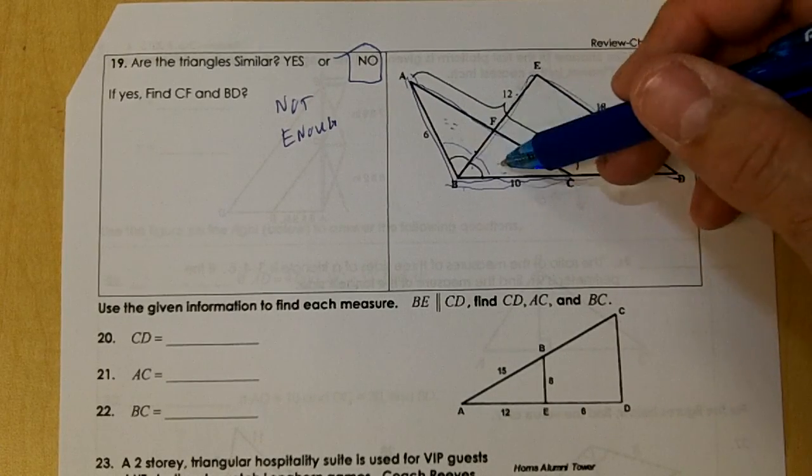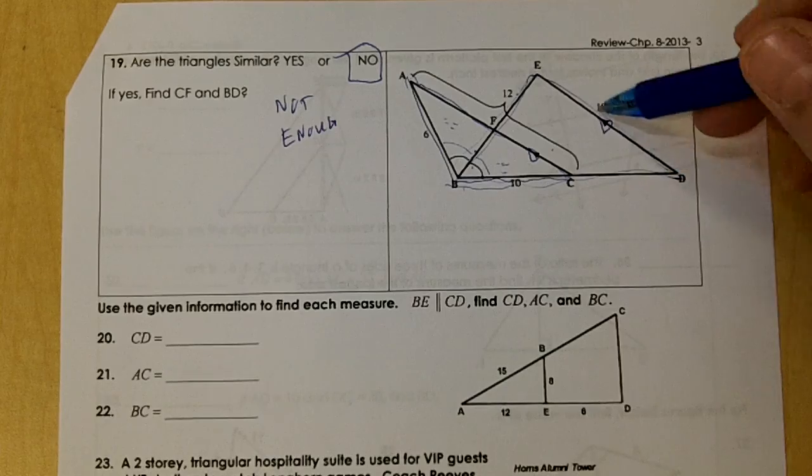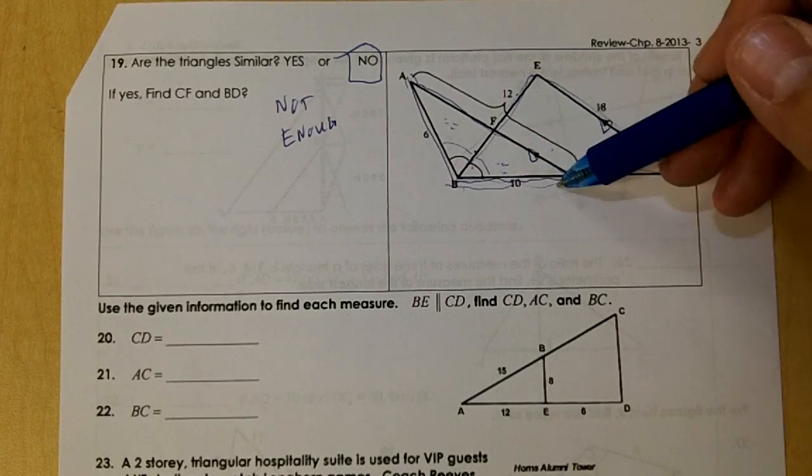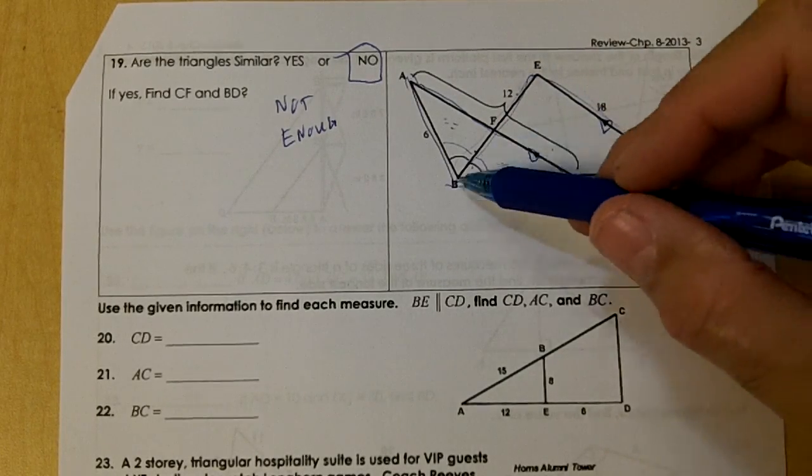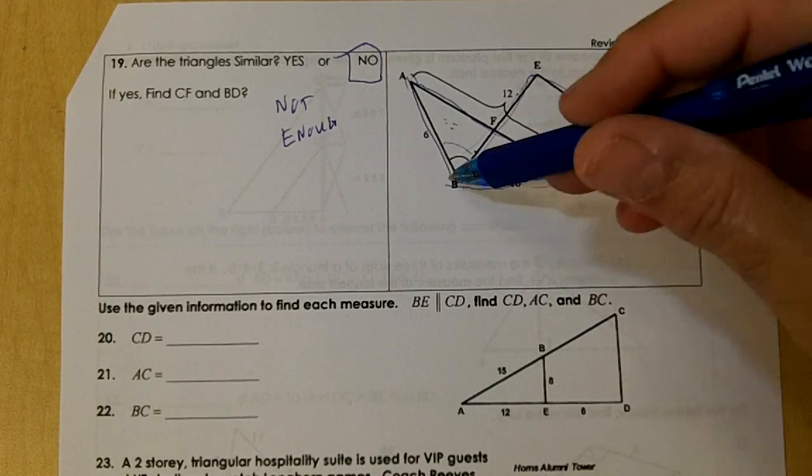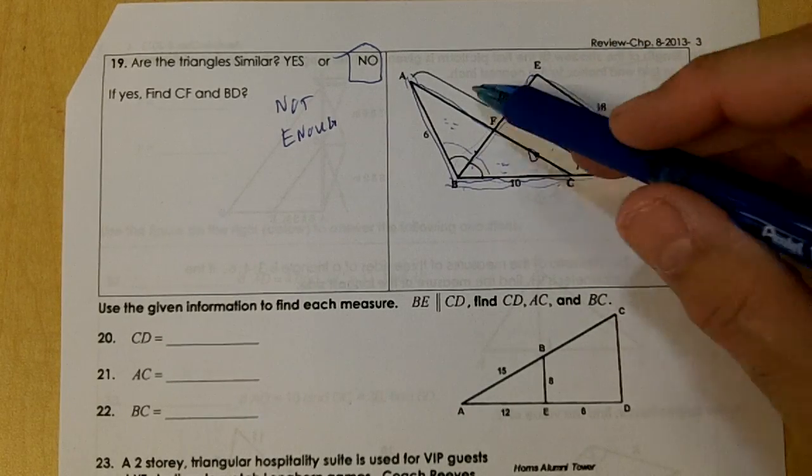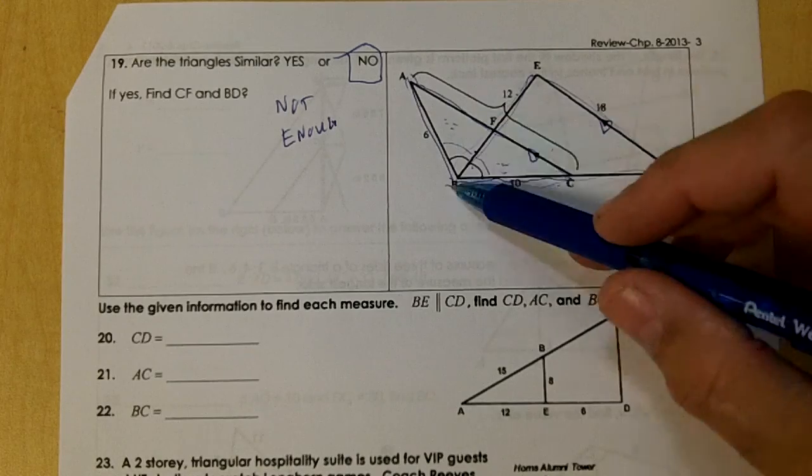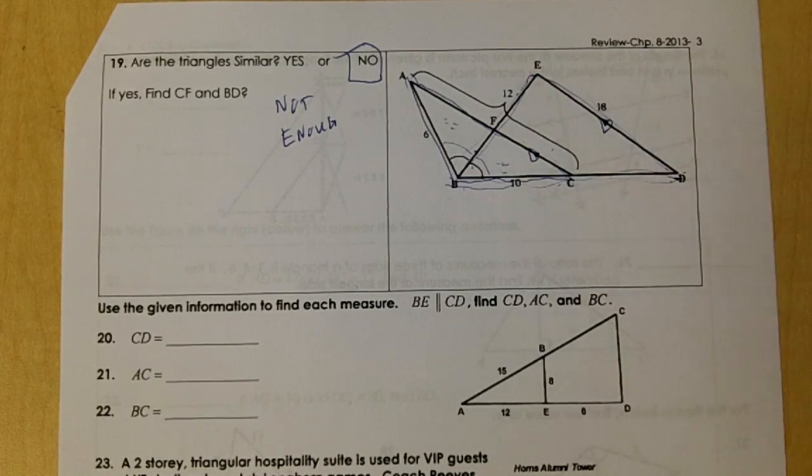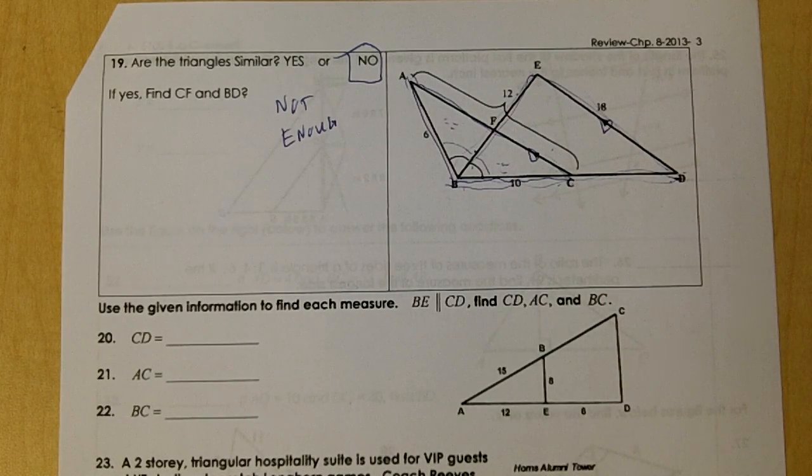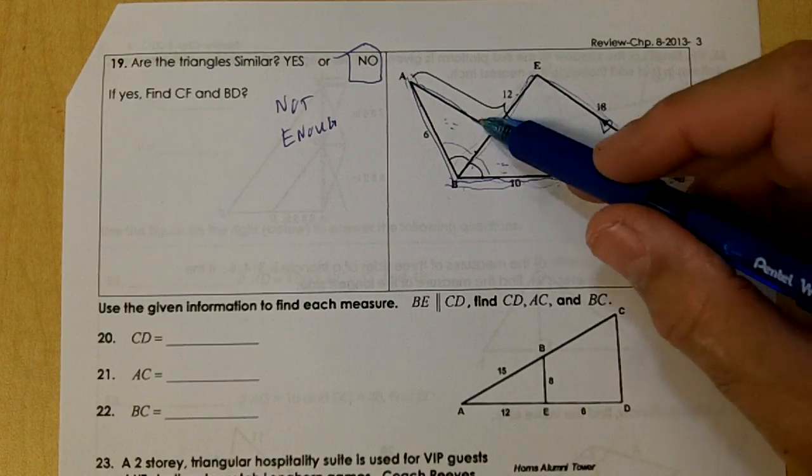But I think we're trying to prove that these two big ones - CF would be here and BD would be the big one, right? So I don't think you could prove that this one is the same as this one, because you don't have the parallel lines in the right spot. You don't need anything with these angles.